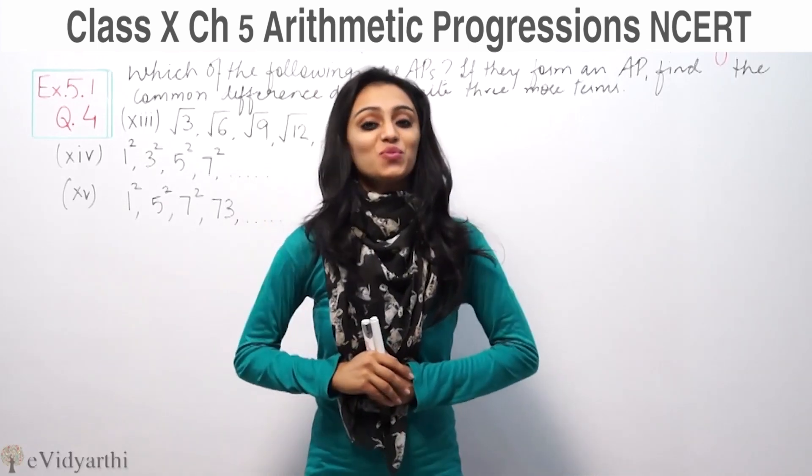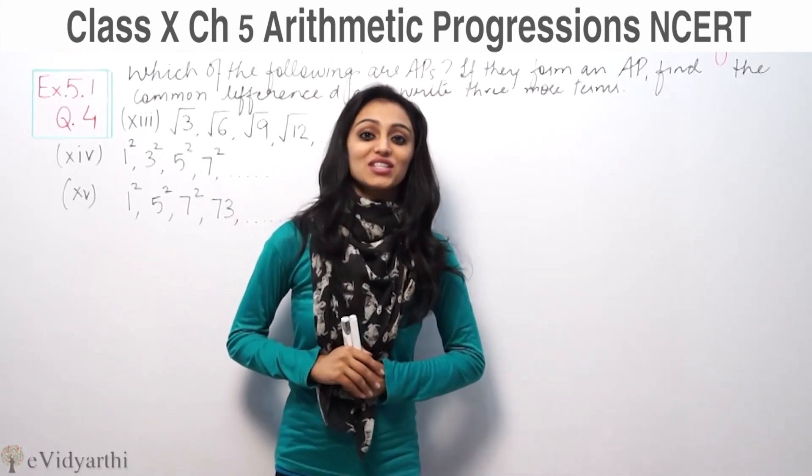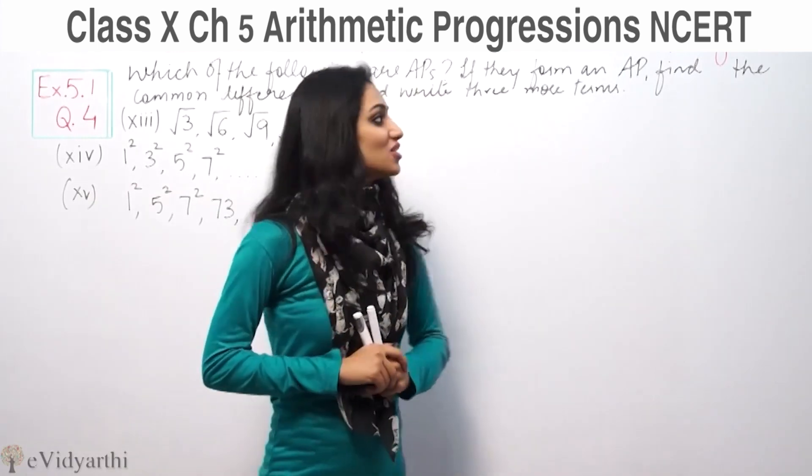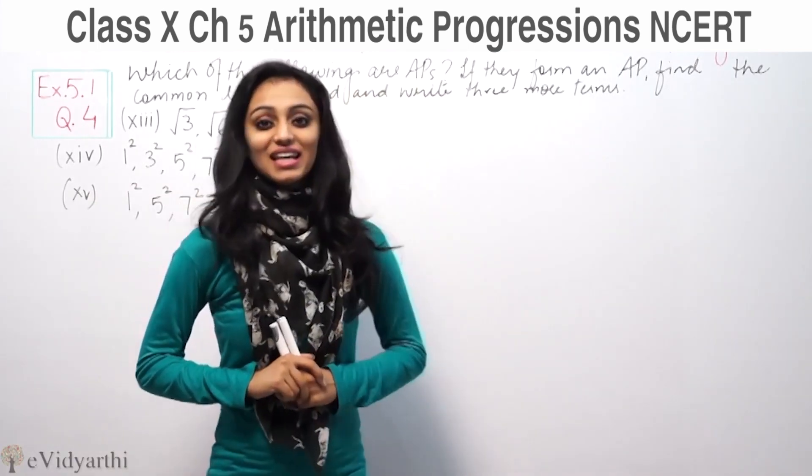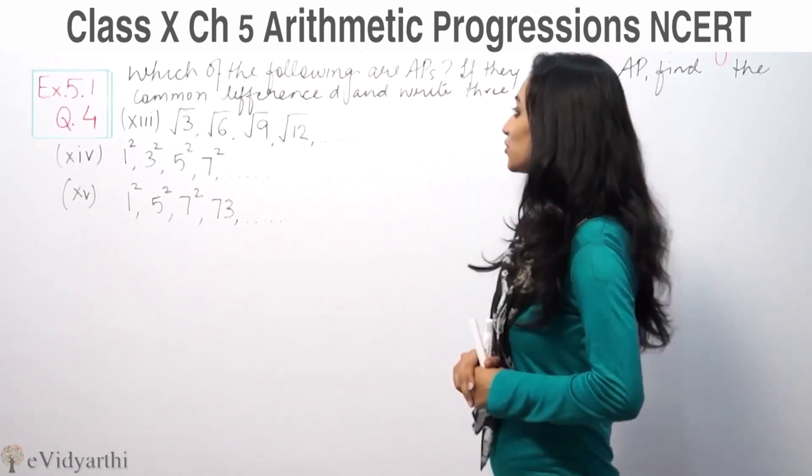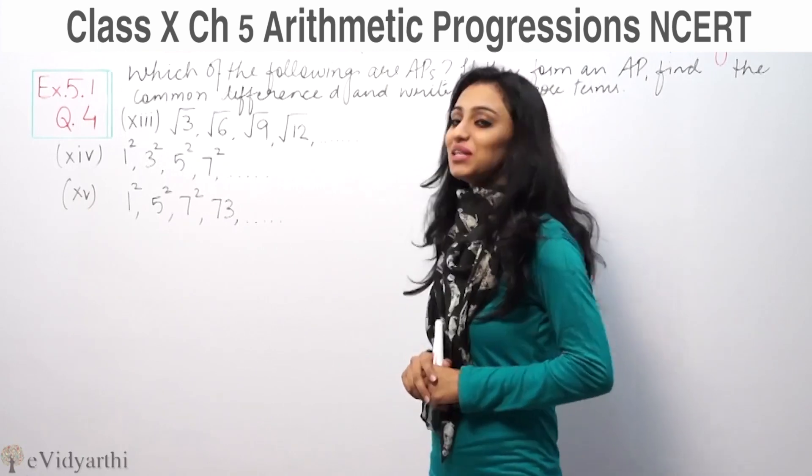Hey what's up, this is Kushku with another question of arithmetic progression. This is question number 4 from exercise 5.01, page number 100 from NCERT. This says which of the following are APs? If they form an AP, find the common difference and the next 3 more terms.